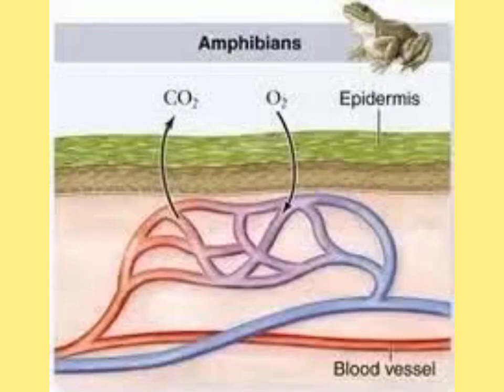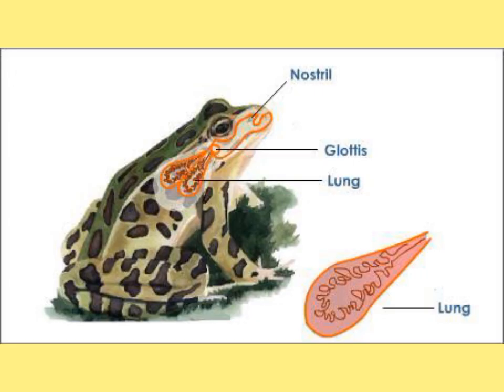Amphibians have moist skin with a good supply of capillaries, which can exchange oxygen and carbon dioxide with the air or water. Amphibians also have lungs that can be inflated by a kind of swallowing action. They do not have a diaphragm or ribs.